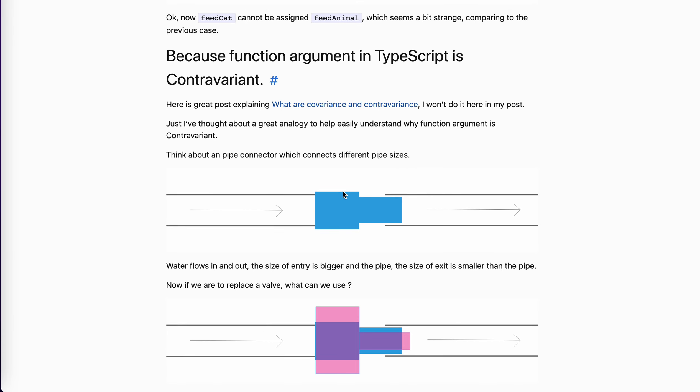So suppose we have a pipe, we have a pipe connector. Water flows from left to right, right? In order for this to work, we need the pipe to hold the entrance, entry, to wrap the whole pipe and the exit to be inside of the pipe, right? For water to flow in and to get out.